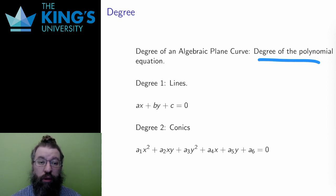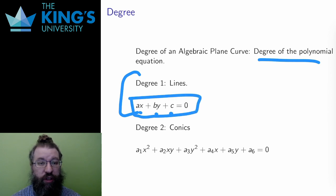So degree one polynomials are still lines. For degree one, only x, y, and a constant can show up. The general equation of a line is ax plus by plus c equals zero, and I don't use the slope intercept form here, since I want to allow vertical lines as well, and vertical lines can't be written in slope intercept form.